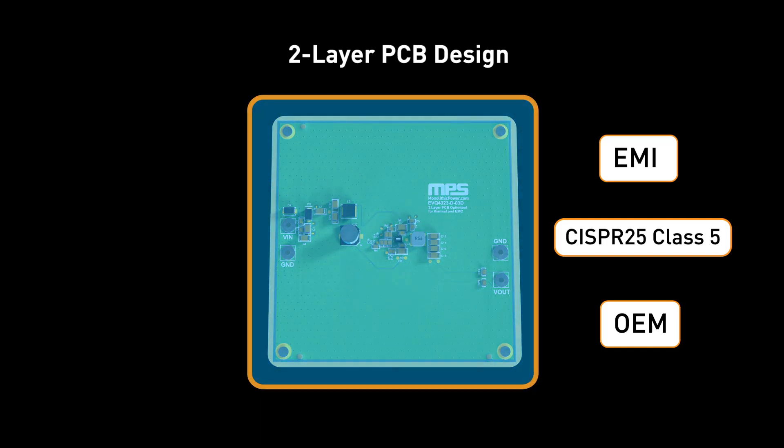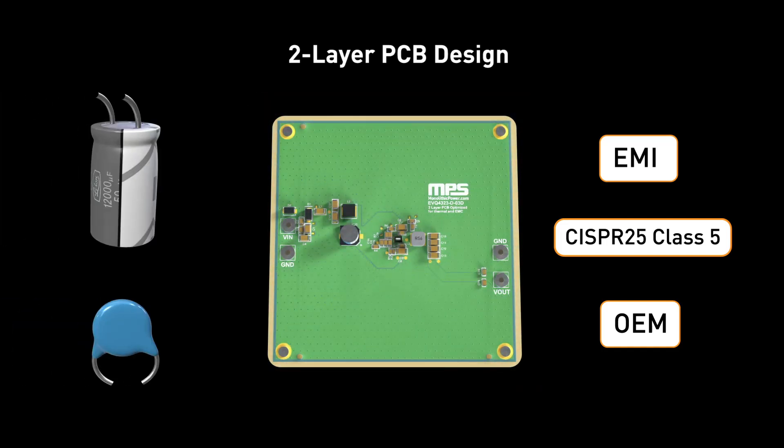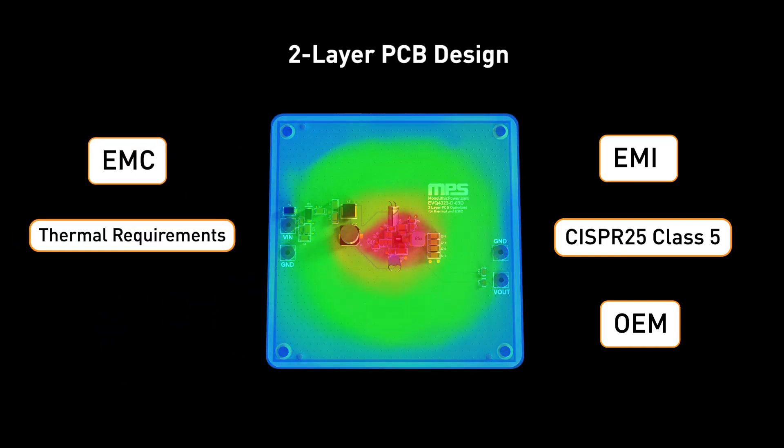Typically, the number of layers depends on the PCB space and the number of components, and DC switching power supplies require careful component placement to meet EMC and thermal requirements.